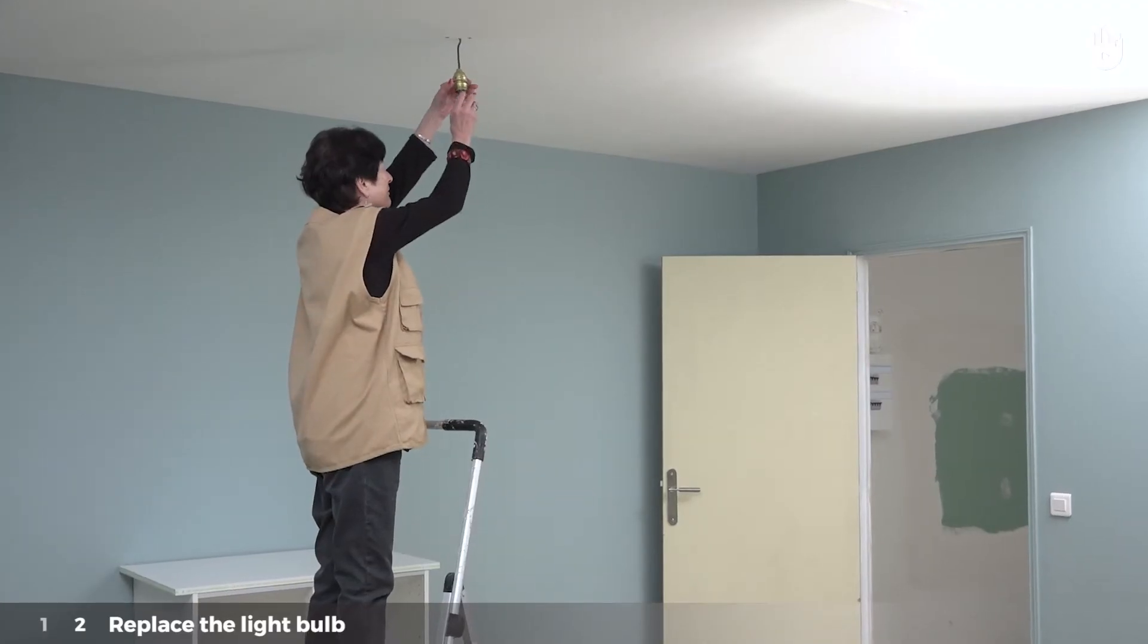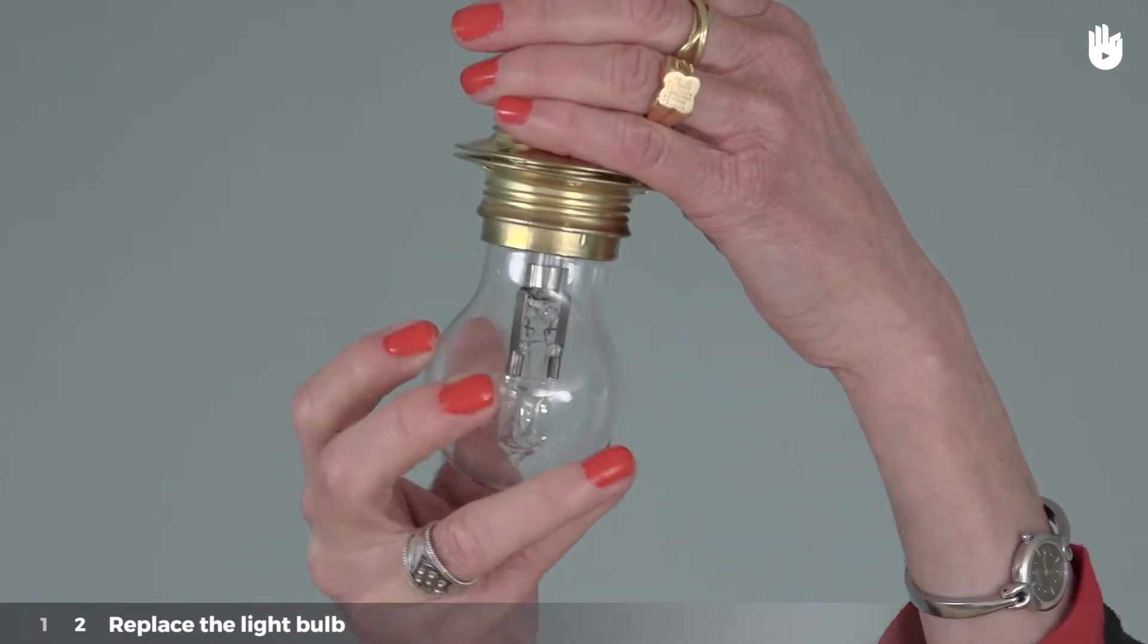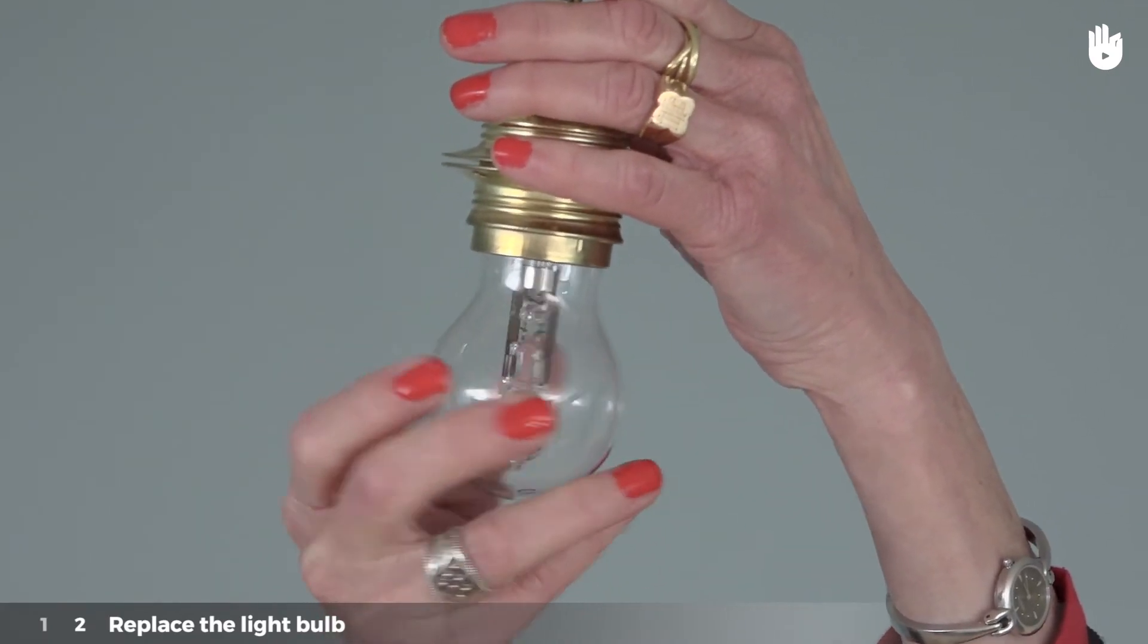Step 2: Replace the light bulb. If it is a screw-in base light bulb, screw the new light bulb in by turning it clockwise.